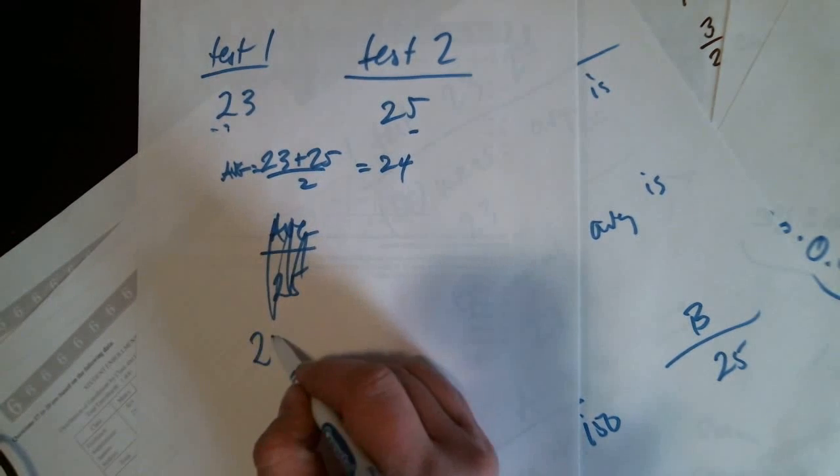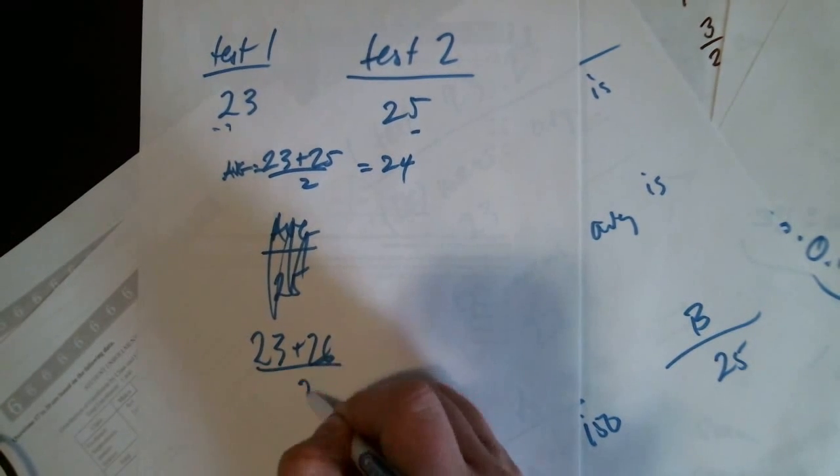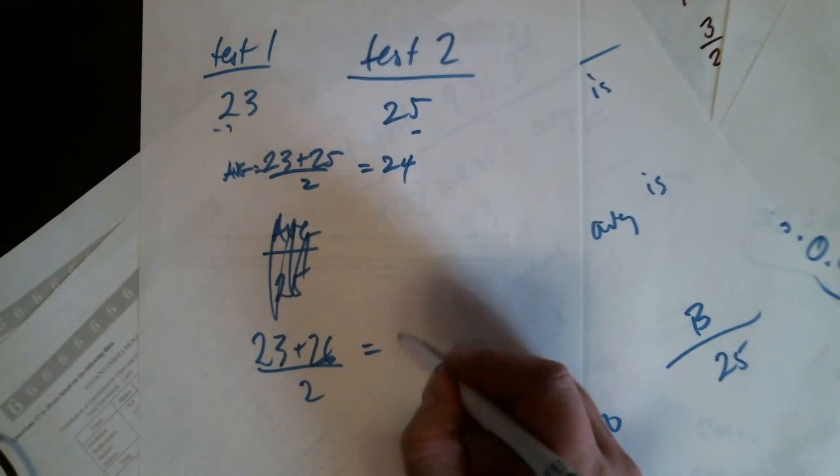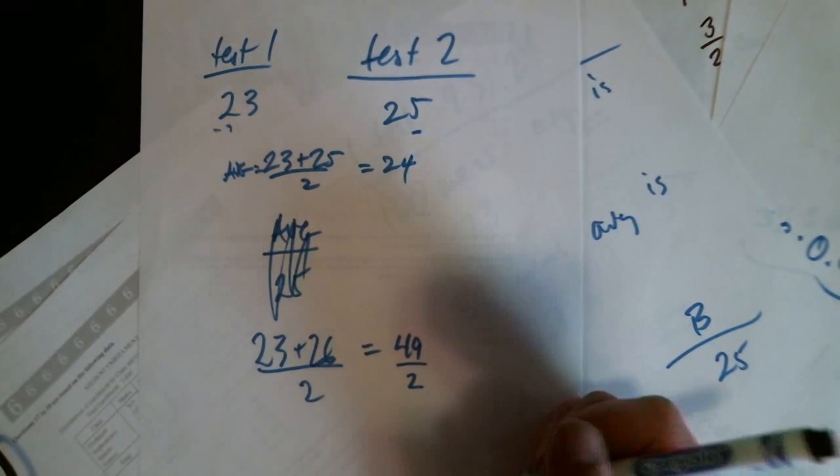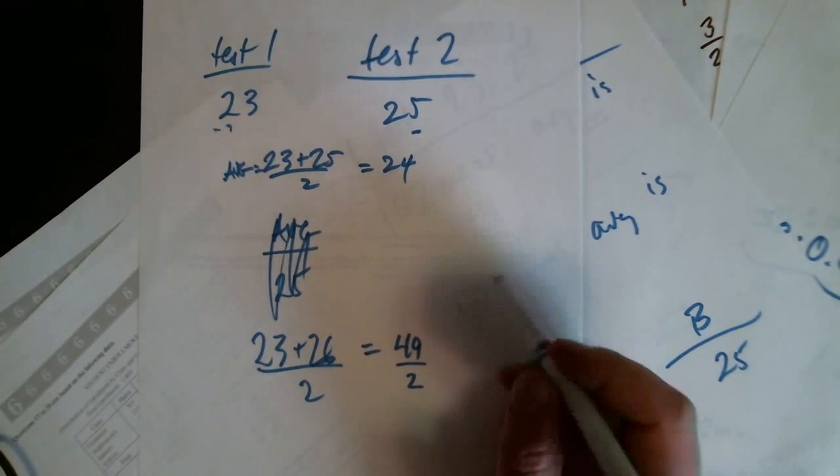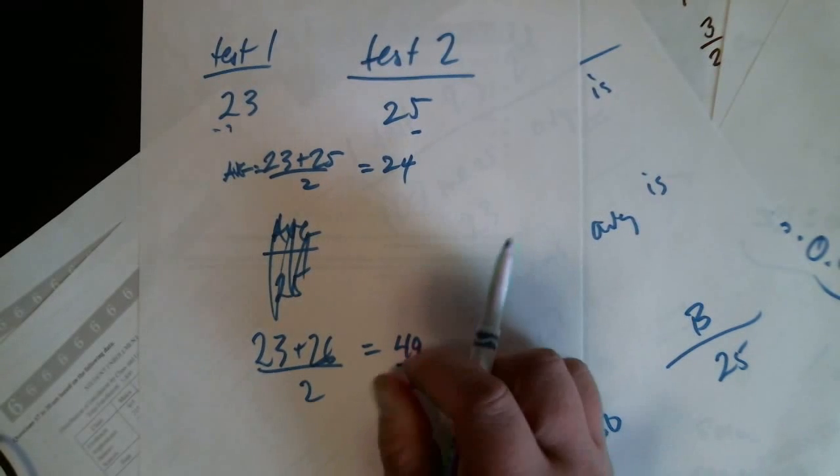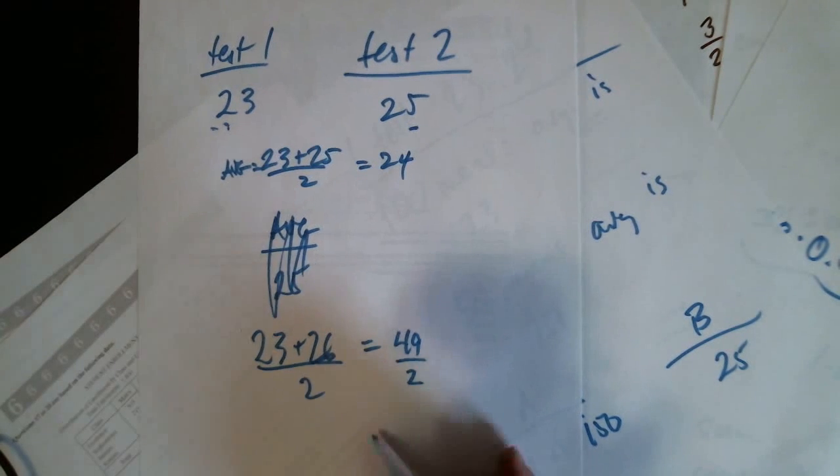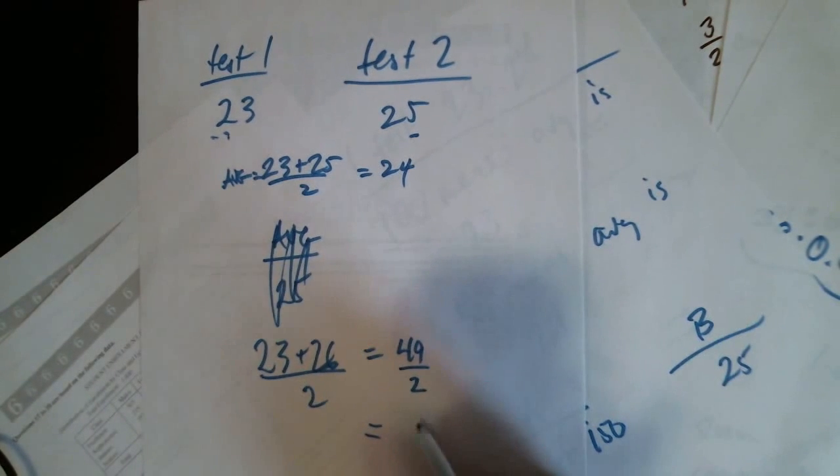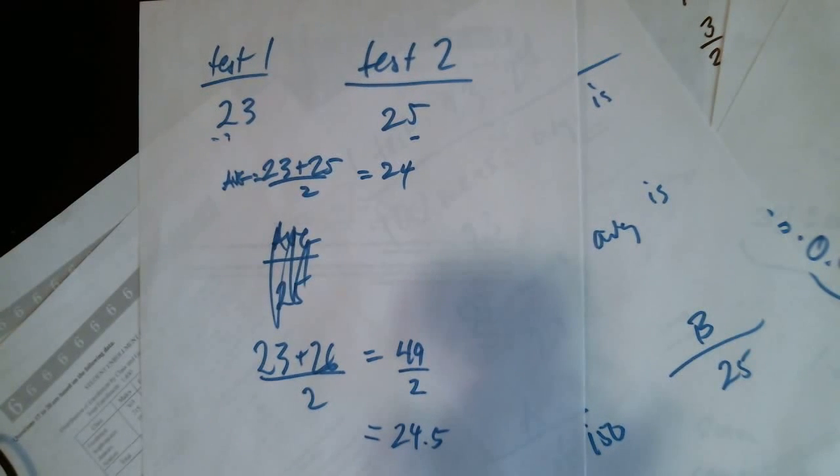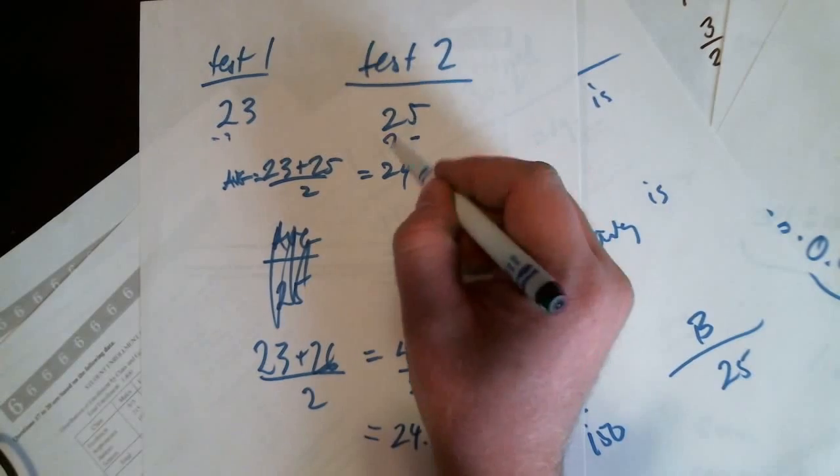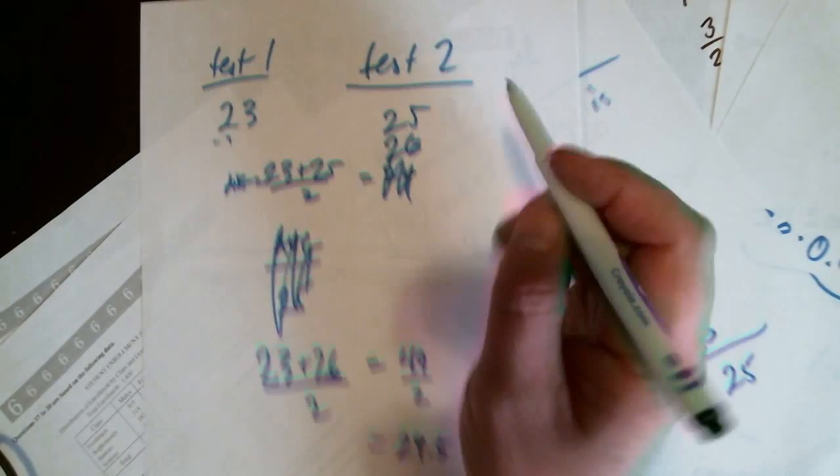So twenty-three plus twenty-six. Fifty-nine. Forty-nine. Yeah, forty-nine. If you have to, just get really quick at the on-screen calculator. Anyway, forty-nine over two is gonna be twenty-four point five. So it brings your average up, twenty-three to a twenty-four point five, but not enough. Okay? So try again.